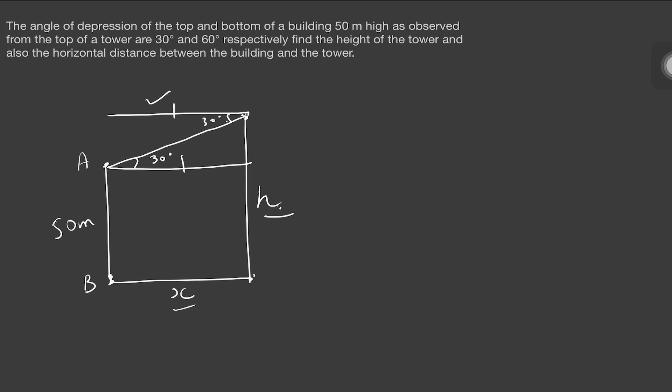There is a detailed video about how to take angle of depression and the common mistakes students usually make — you can check the link in the description box. Now, from the top of the tower to the bottom of the building, the angle of depression is 60 degrees, taken with respect to the horizontal line. Since these two lines are parallel, they form Z-shaped alternate angles, so this angle is also 60 degrees.